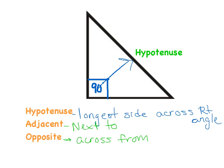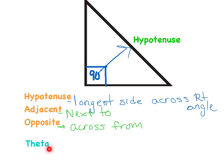I've got one more word for you before we label the rest in our picture here, and that is the term theta. Theta is a Greek letter, and the symbol for it is a nice O with a line through the middle. That theta symbol is what we use in trig to represent any angle. Just get used to these new terms — it's like learning a new language. I'm going to label my theta in this bottom angle of my triangle; you can put theta in the top or the bottom, but it definitely has to be in one of the angles.